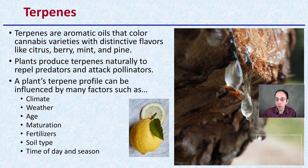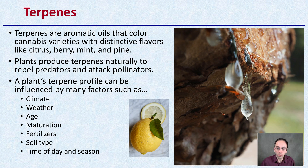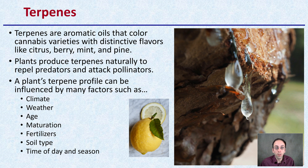We also have something called terpenes. Terpenes are aromatic oils that color cannabis varieties with distinctive flavors like citrus, berry, mint, or pine. Plants produce terpenes naturally to repel predators and also attract pollinators.